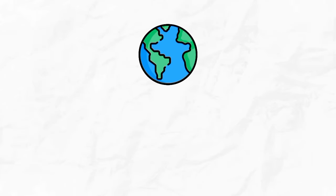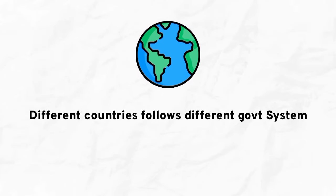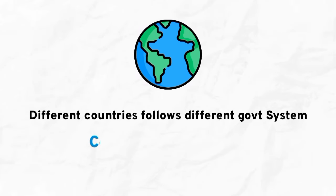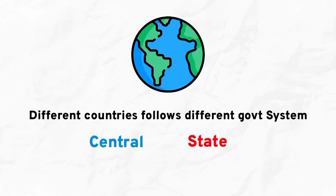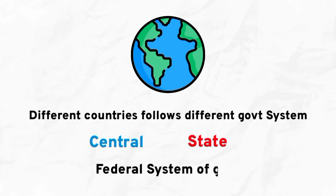This is the government system that follows. The power of Central and the power of State — this is the federal system. This is the federal system in India. The central government and the state government share power under this system.